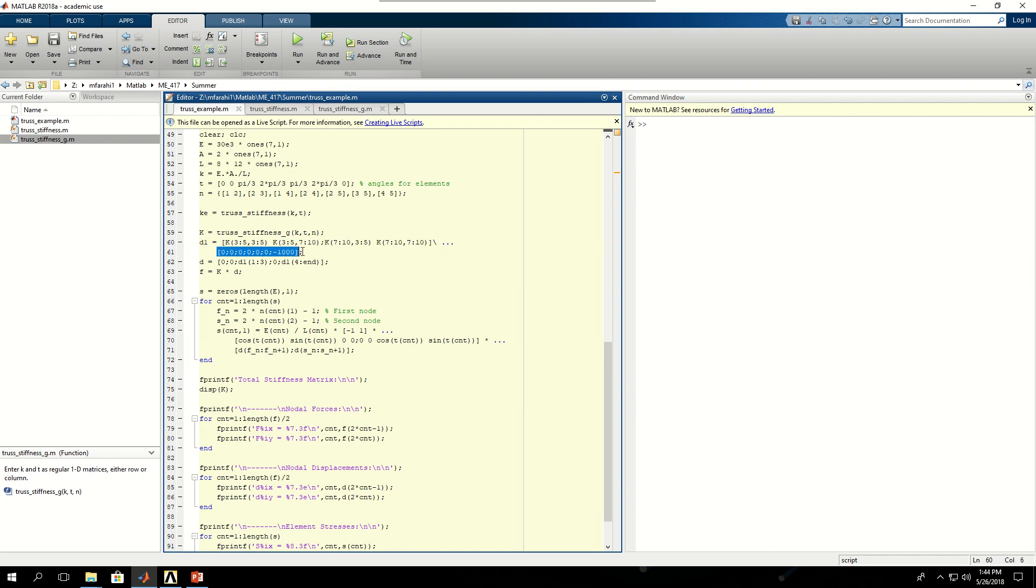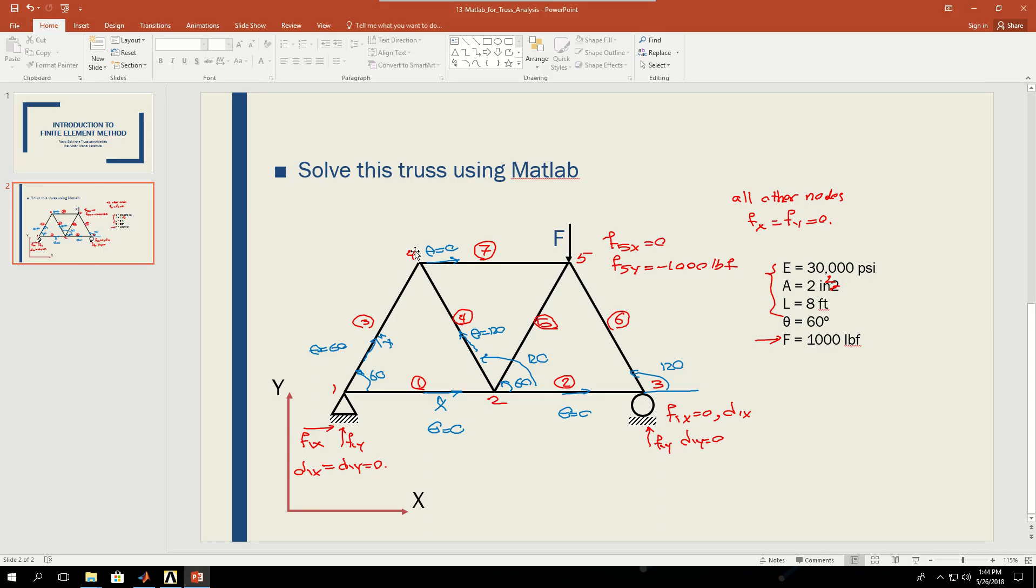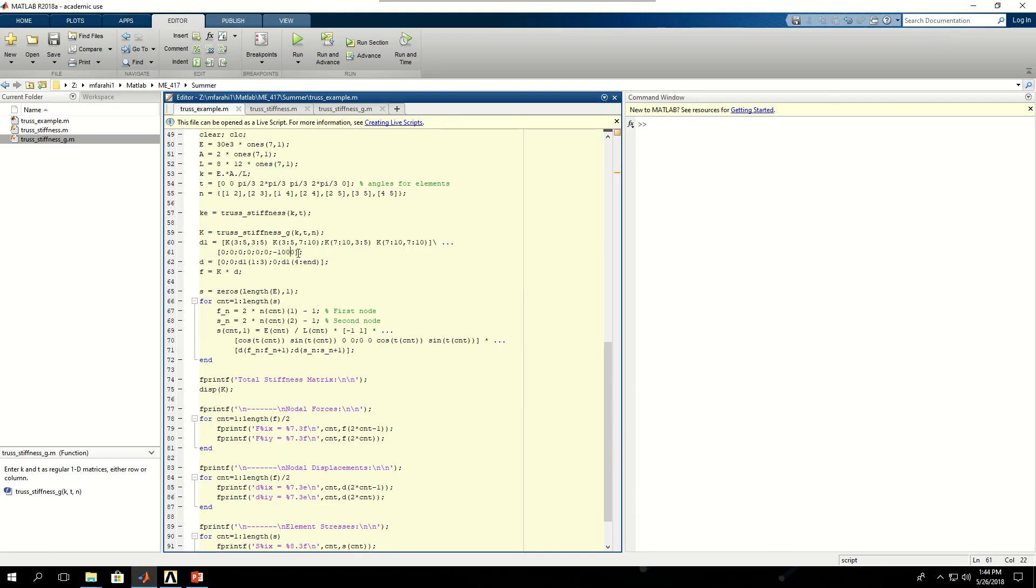Then I make a vector of nodal forces from here. I know that these are 0, these are 0, x is 0, and y is minus 1000, and also f3x is 0. So I make those, and put them in this vector there. And then I make the portion of the displacement vector that I don't know. So by inversing the stiffness matrix and multiplying it by the nodal forces that I know, I find the unknown nodal displacements, and I use those values to make up the entire nodal displacements.